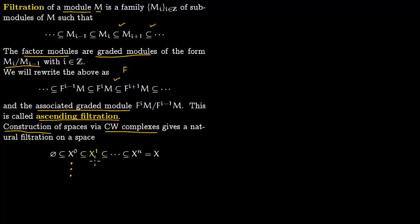That's how you construct X^1, which contains one cells as well as zero cells. Then you construct X^2 by attaching two cells, attaching the boundary of two cells to one cells, and so on.